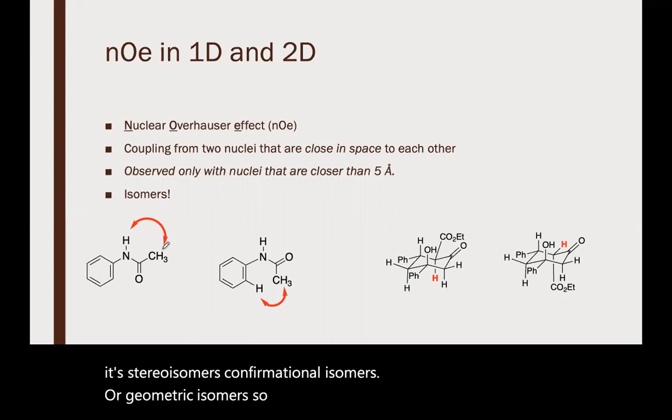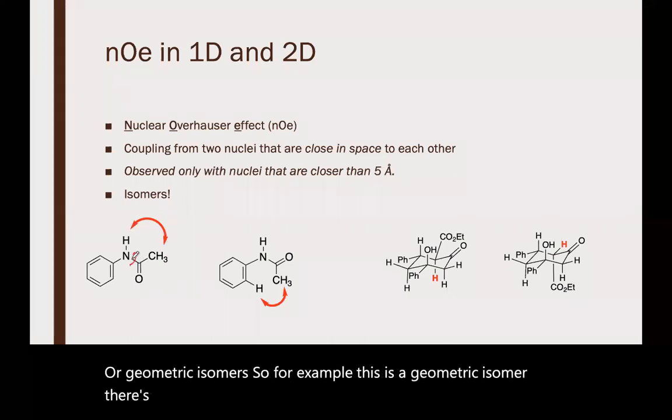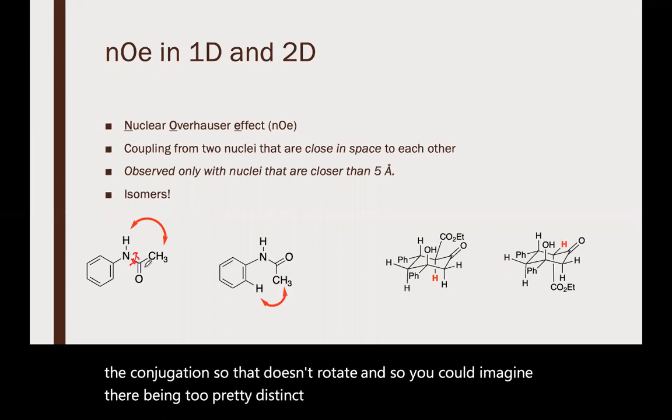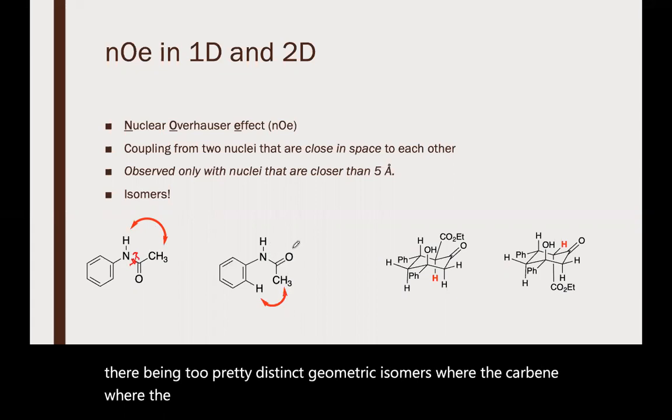For example, this is a geometric isomer. There's not much rotation around this bond because of conjugation, so you could imagine two distinct geometric isomers where the methyl is next to the hydrogen, or in the other isomer where the methyl is pointing more towards the ring.